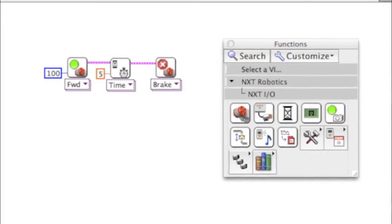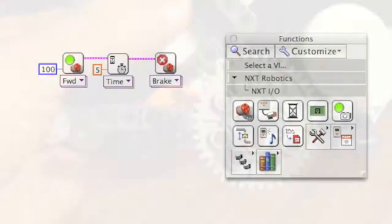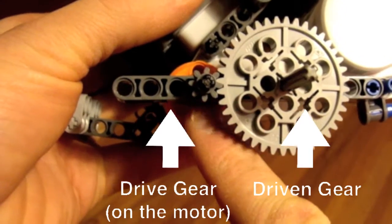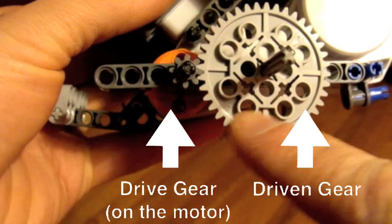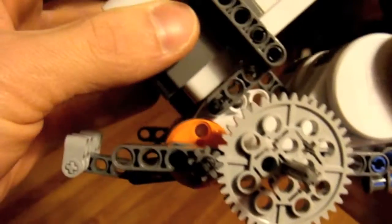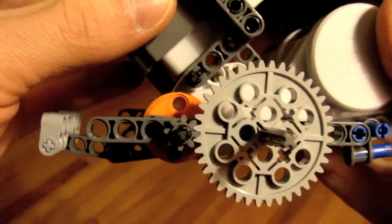For the rest of this video, I'm going to use the same program. It's always going to run at 100%. Now here's that same robot, but with gears. The gear on the motor is the drive gear, and the drive gear turns the driven gear.